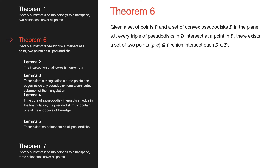A set of simply connected regions in the plane form a family of pseudodisks if the boundaries of any pair of regions either do not intersect or intersect at exactly two points. Theorem 6 states that if a set of convex pseudodisks and a set of points have the constraint that every three pseudodisks intersect at a point in the set, then two points in the set hit all pseudodisks.